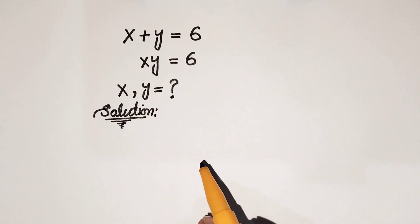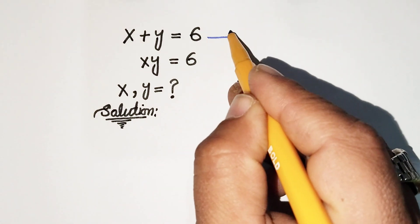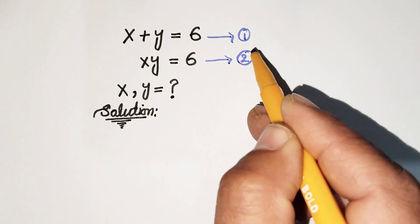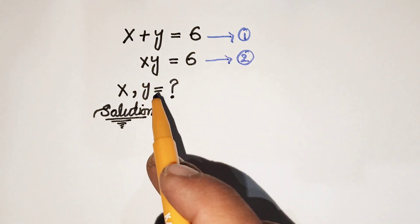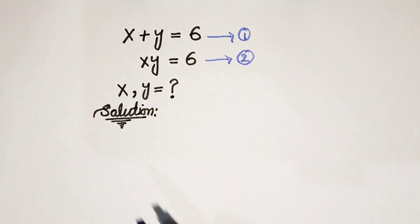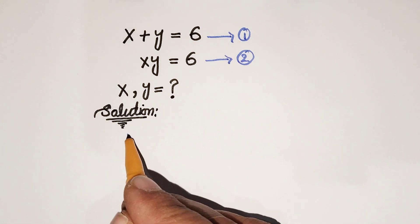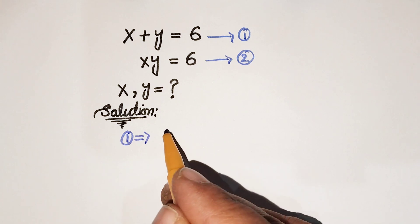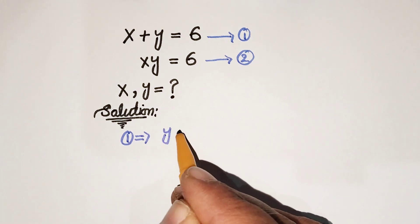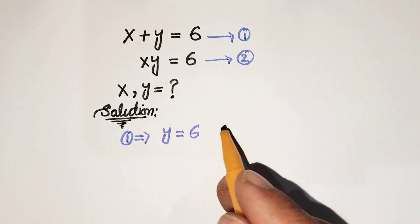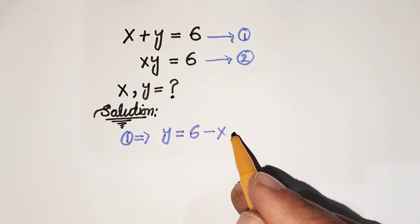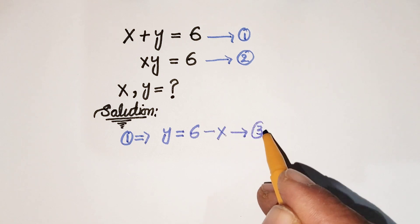First of all, we are going to name these equations — equation number 1 and equation number 2. Now we are going to use equation number 1 to find the value of y. Equation 1 gives us x plus y equals 6, so y is equal to 6 minus x. Let's call this equation number 3.